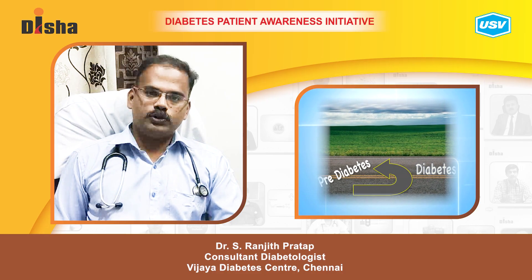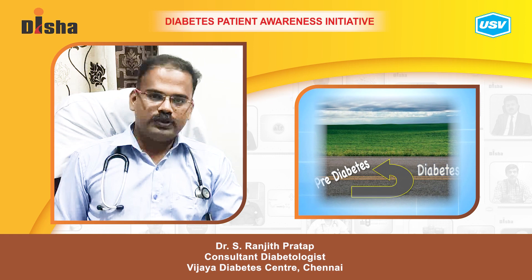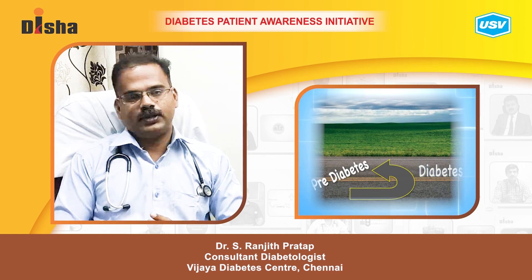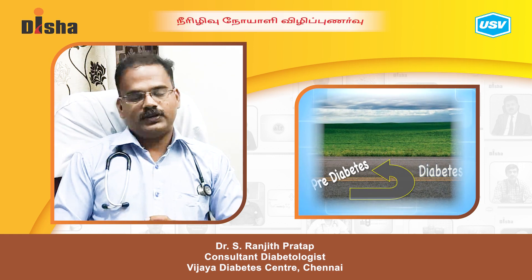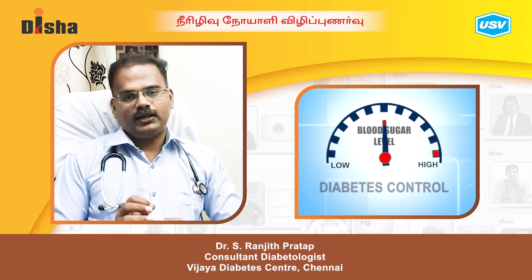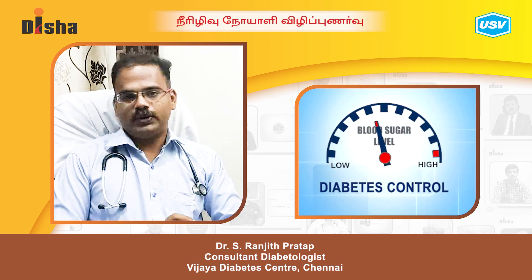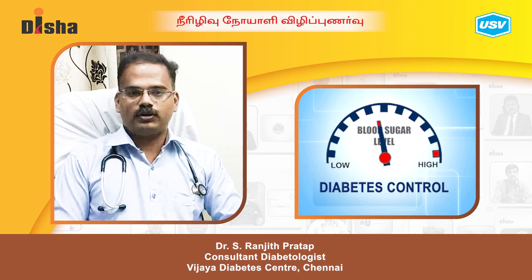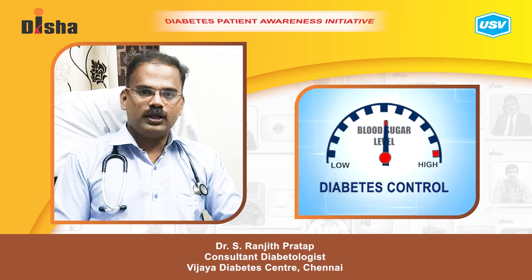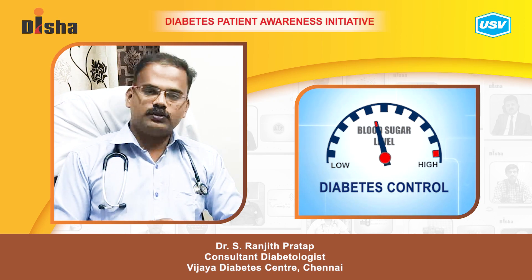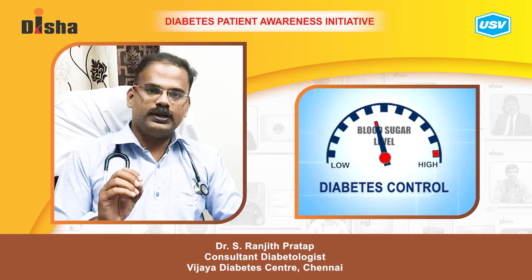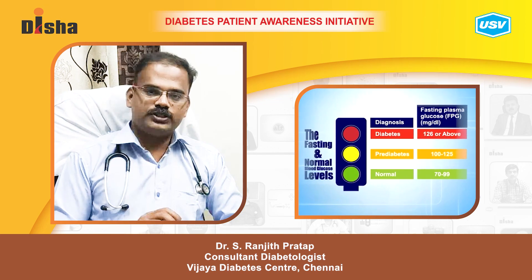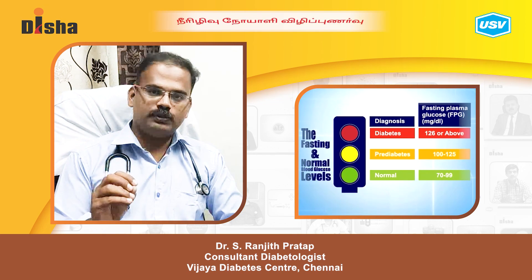Today I am going to talk about how to prevent pre-diabetes from progressing to diabetes. First, what is normal blood sugar? Normal fasting blood sugar is less than 100 mg/dL. Post-meal blood sugar should be less than 150 mg/dL.